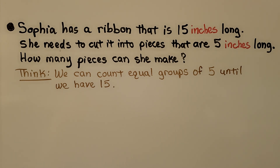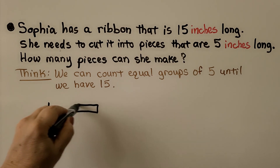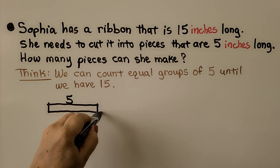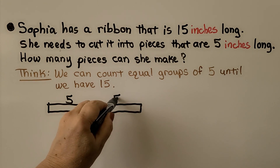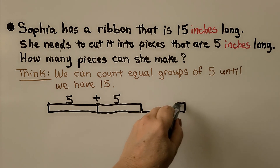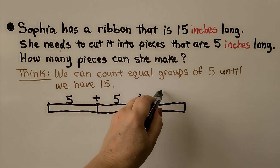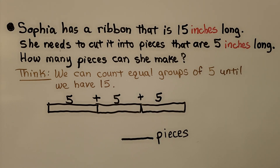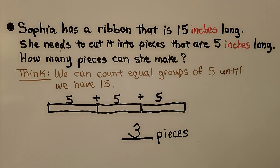Sophia has a ribbon that is fifteen inches long. She needs to cut it into pieces that are five inches long. How many pieces can she make? We count equal groups of five until we have fifteen: five, ten, fifteen. That means she would have one, two, three pieces. With fifteen we can make three equal groups of five.